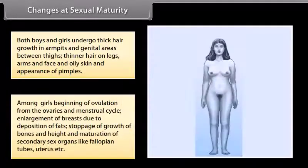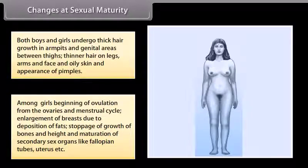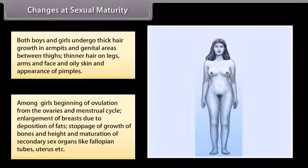Among girls: beginning of ovulation from ovaries and menstrual cycle, enlargement of breasts due to deposition of fats, darkening of nipple skin, stoppage of growth of bones and height, and maturation of secondary sex organs like fallopian tubes and uterus.